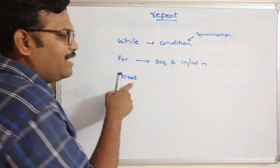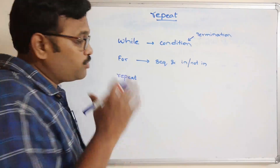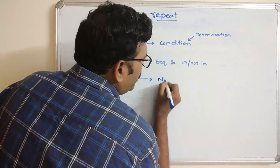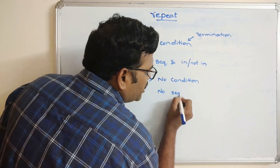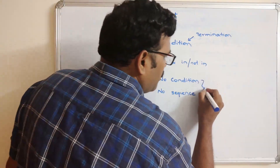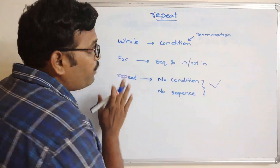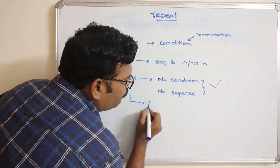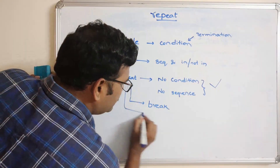Repeat is also a category of iterative statements — the same set of instructions keeps executing multiple times. But when does termination occur? In repeat, there is no condition and no sequence. So when will the instructions be terminated if we use repeat? The instructions will be terminated with a break statement. That means repeat is always an infinite loop.